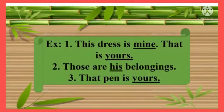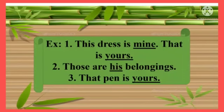This dress is mine. That is yours. Those are his belongings. That man is yours. Now you can see the underlined words: mine, yours, his, yours again. All these are possessive pronouns and they show ownership. In the first example, you can see the ownership of the dress.